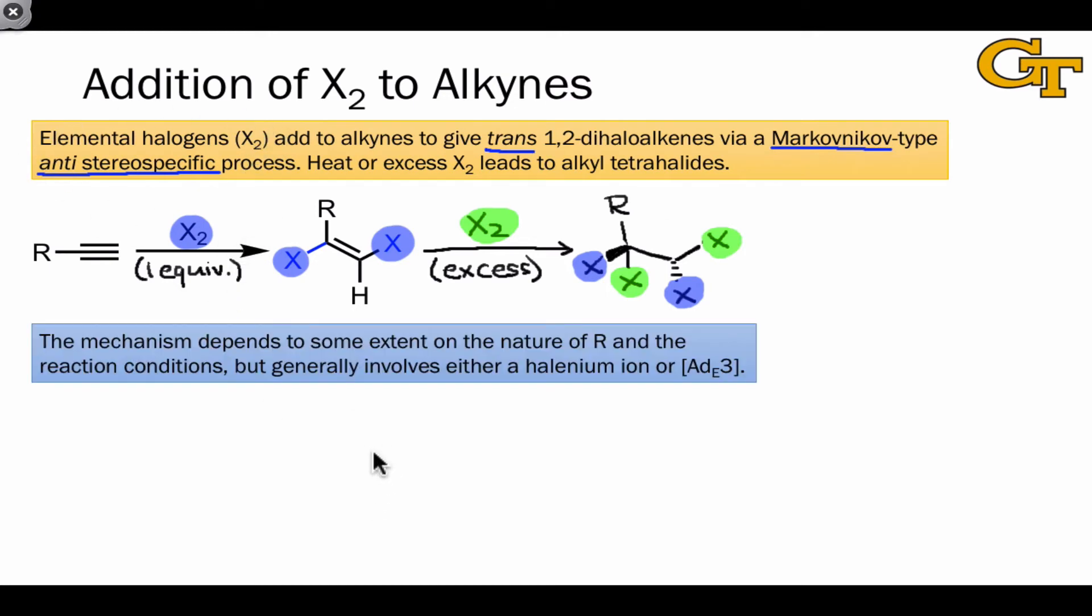What mechanistically gives rise to the anti-stereo-specificity of the reaction? In general, the way this occurs is through a cyclic three-membered ring intermediate analogous to the situation when alkenes are used. The alkyne donates a pair of electrons to one of the atoms of the elemental halogen, and at the same time the elemental halogen rebounds back, forming a bond to the alkyne. This intermediate retains a pi bond within its three-membered ring.